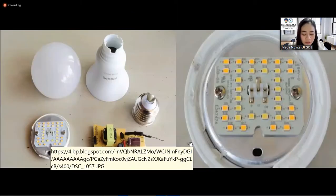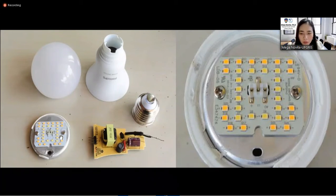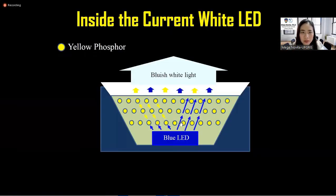Here, I show you the picture of white LED lamp. If we open it, you'll see the electronic components like this. The small square chips here are the most important part. Here, the yellow chip, yellow square here. It consists of blue LED chip coated with yellow phosphor. So, this is the structure of inside the current white LED. Blue LED emits blue light and converted into white light by the yellow phosphor.